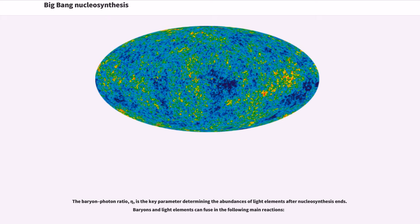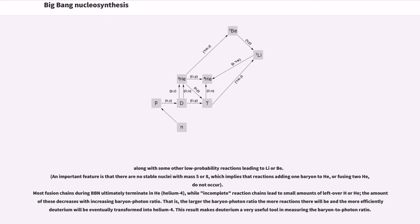The baryon-photon ratio, eta, is the key parameter determining the abundances of light elements after nucleosynthesis ends. Baryons and light elements fuse in the following main reactions. Along with some other low probability reactions leading to lithium or beryllium, most fusion chains during BBN ultimately terminate in helium, while incomplete reaction chains lead to small amounts of leftover hydrogen or helium. The amount of these decreases with increasing baryon-photon ratio.